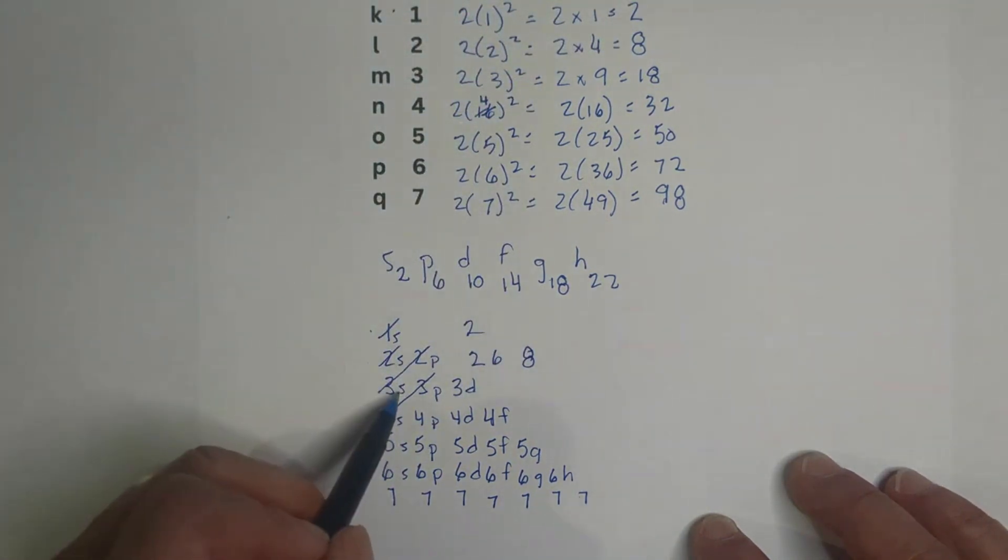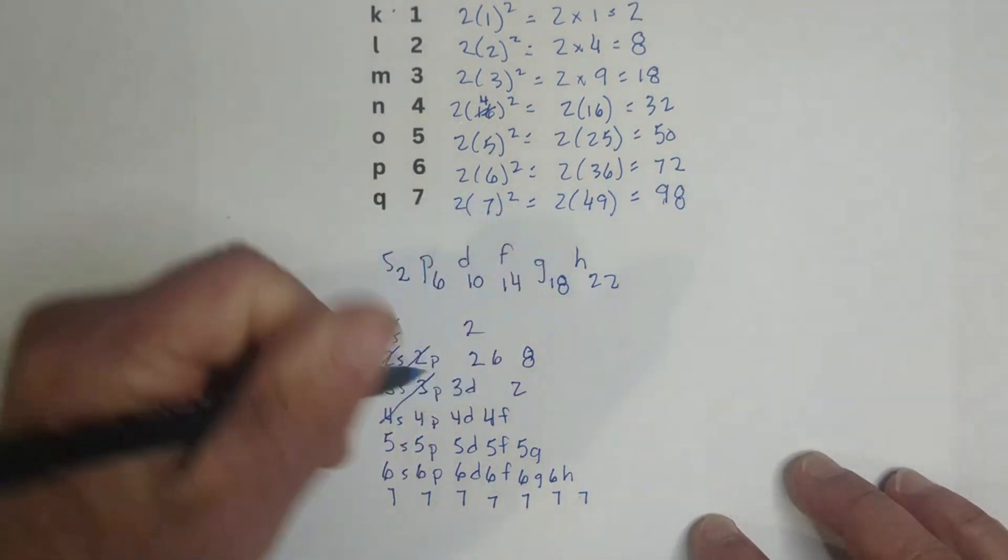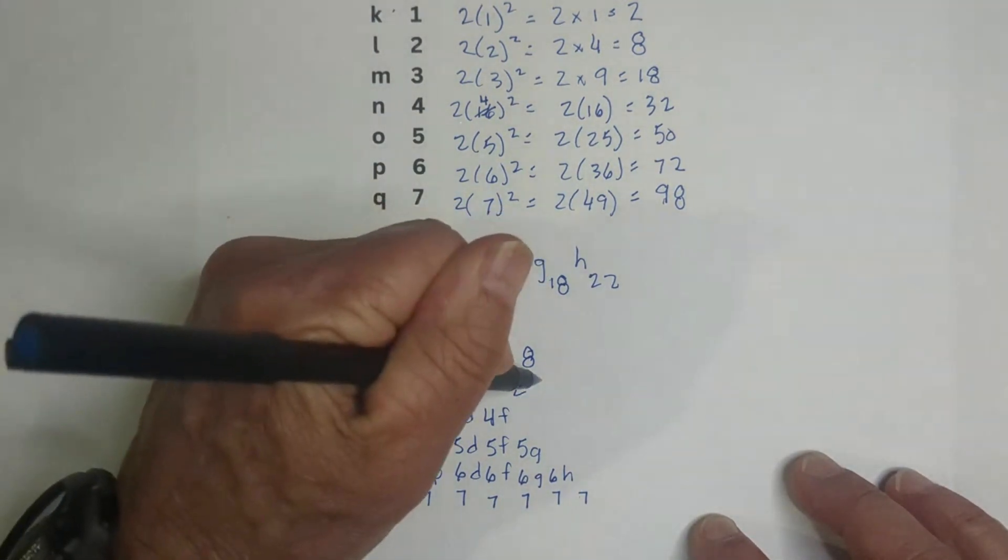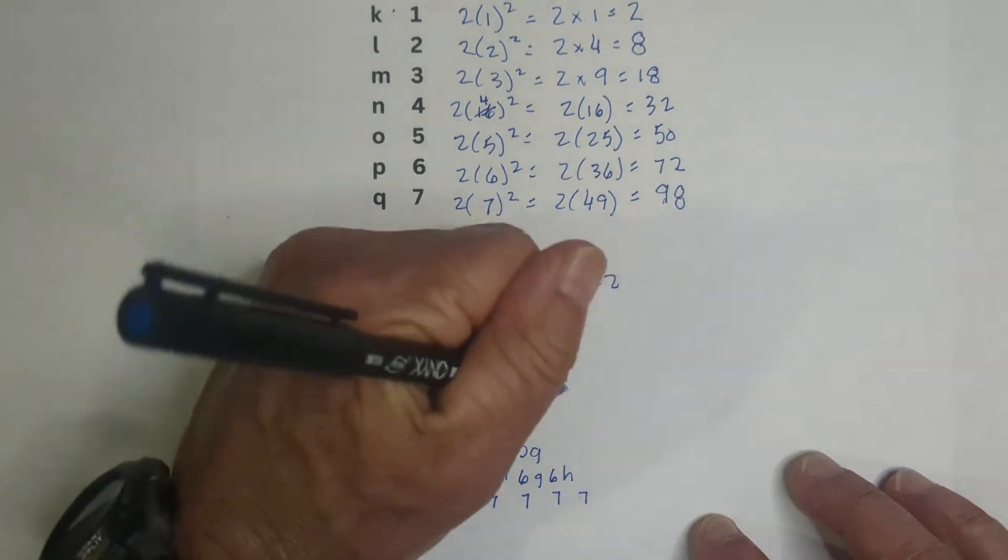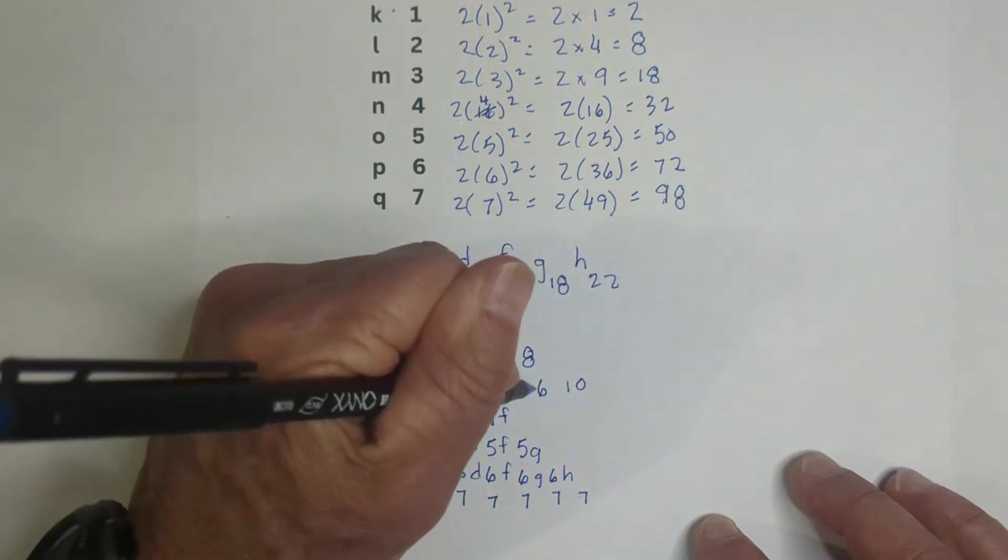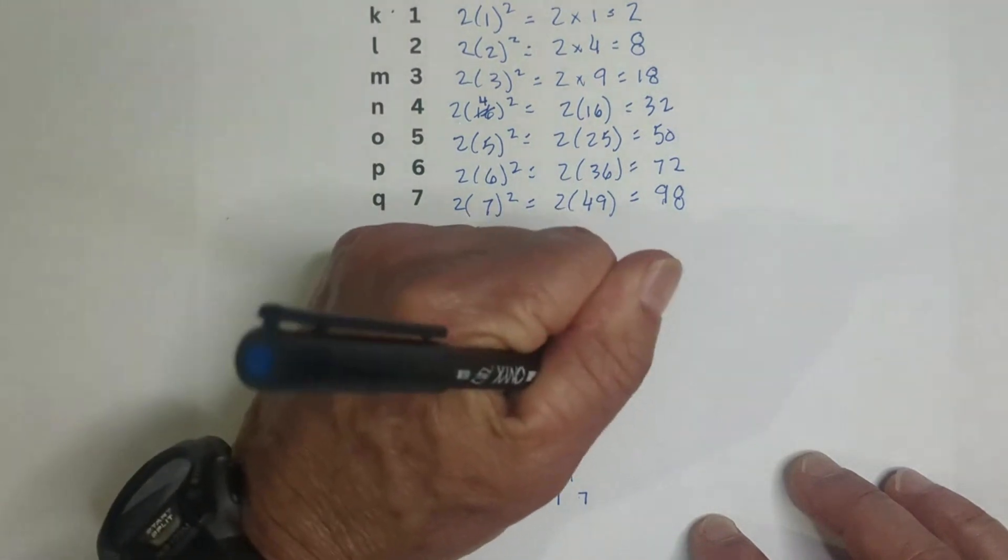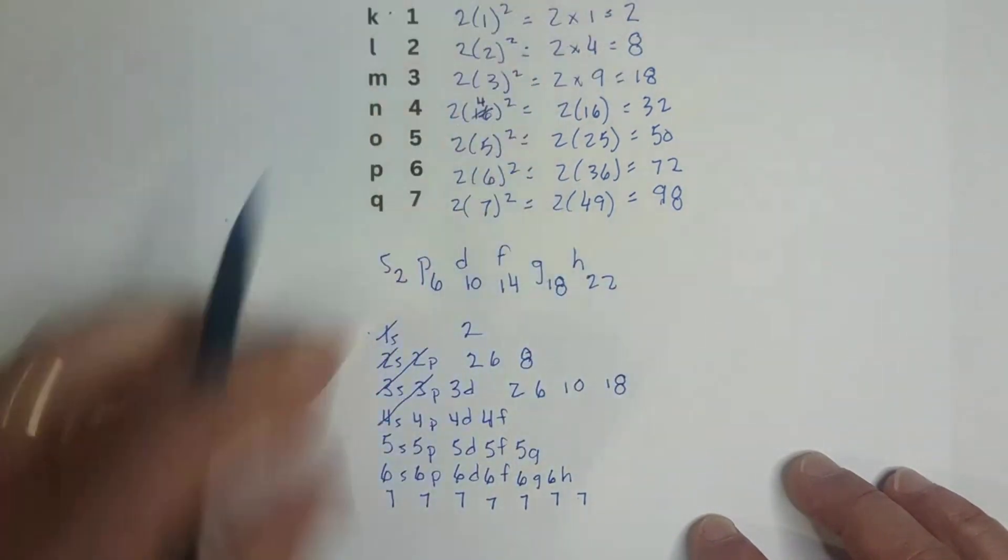I'm just going to go to four. Notice that we have an S, we have a P, which is six, and then we have a D. And remember, D is 10. When you add this together, two plus six plus 10, that's 18. And it's the same as this.